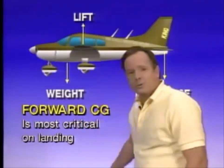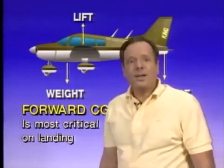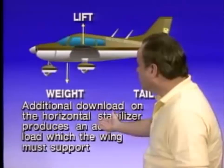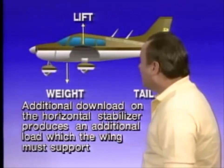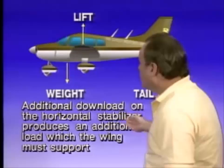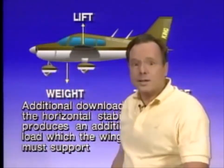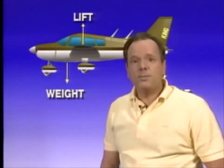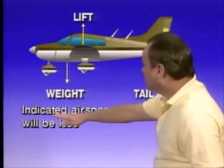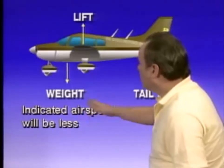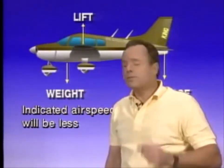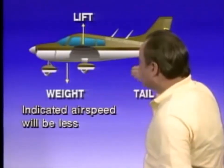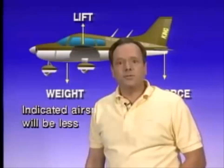Forward CG is most critical in landing the aircraft. If you have the CG at the forward limit, there is an additional download imposed on the horizontal stabilizer, which produces an additional load that the wings have to support, so the airplane is less efficient. If the CG is at the most forward allowable position and you maintain constant power and altitude, your indicated airspeed will be less because the airplane is less efficient.